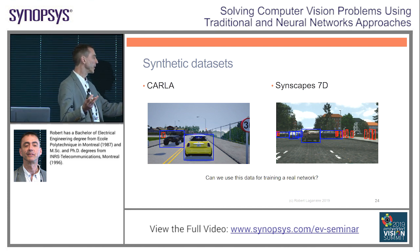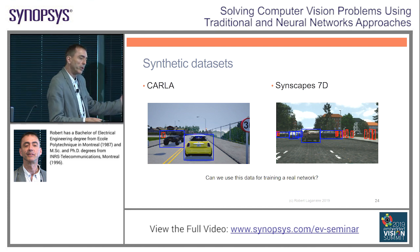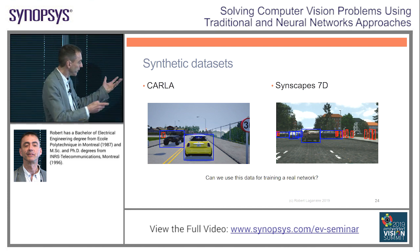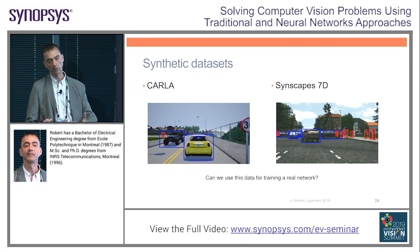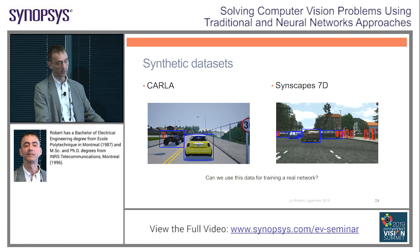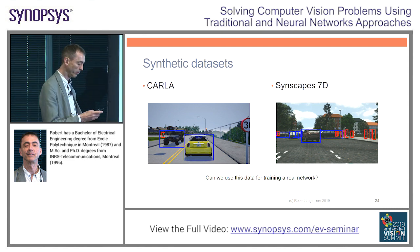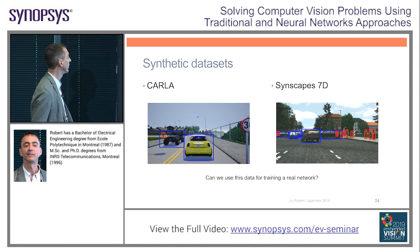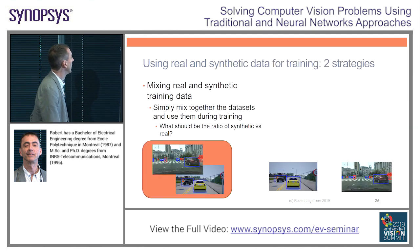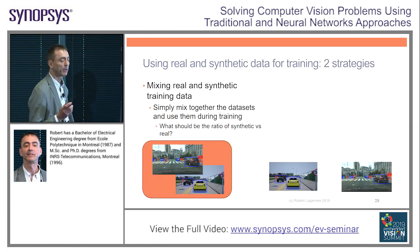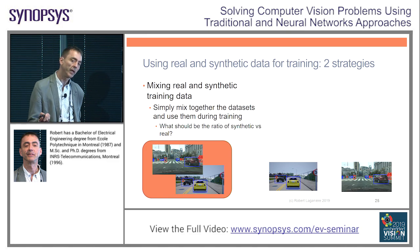So the question is: is it a good idea to use synthetic images to train a network that will be deployed in the real world? We did a couple of experiments, and the first question is: how do we train?